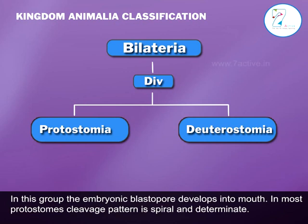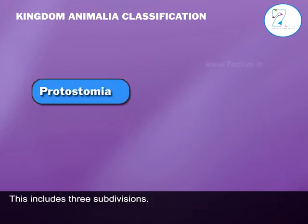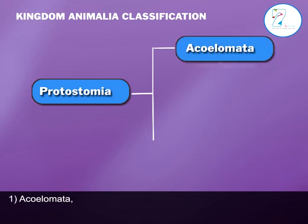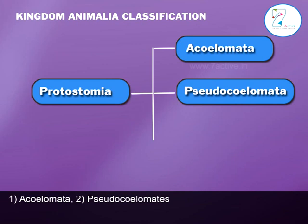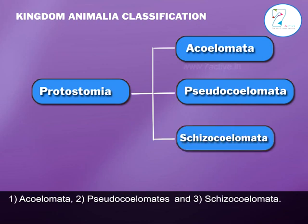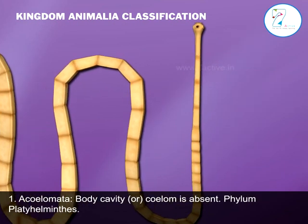The cleavage pattern is spiral and determinate. Protostomia includes three subdivisions: 1. Acoelomata, 2. Pseudocoelomata, and 3. Schizocoelomata.